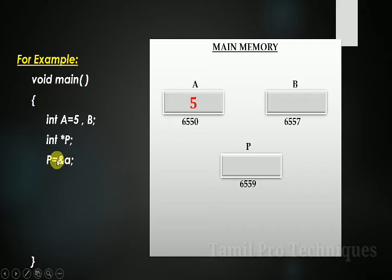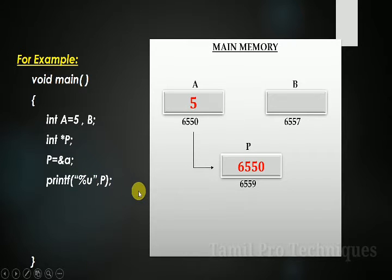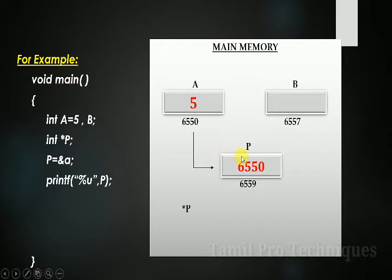We store the address of A in the pointer. In the next program, we have a pointer P. We have the address of A stored in pointer P, so we can view the address of A through P.